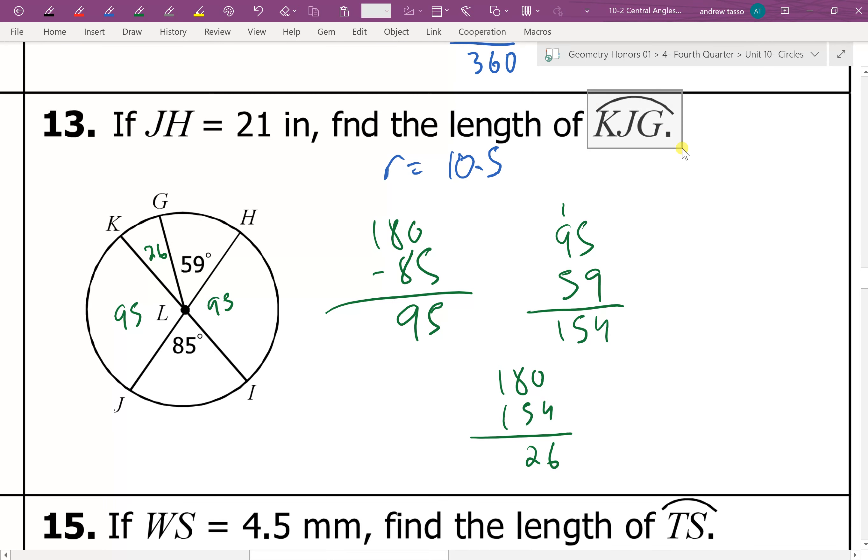Now, let's find the measurement for the arc, KJG. So starting at K, going around to J, and going around all the way to G. So notice that this is going everything but the 26 that's missing from here. So everything is equal to 360. But it's short by 26. So this would end up being 334 degrees.